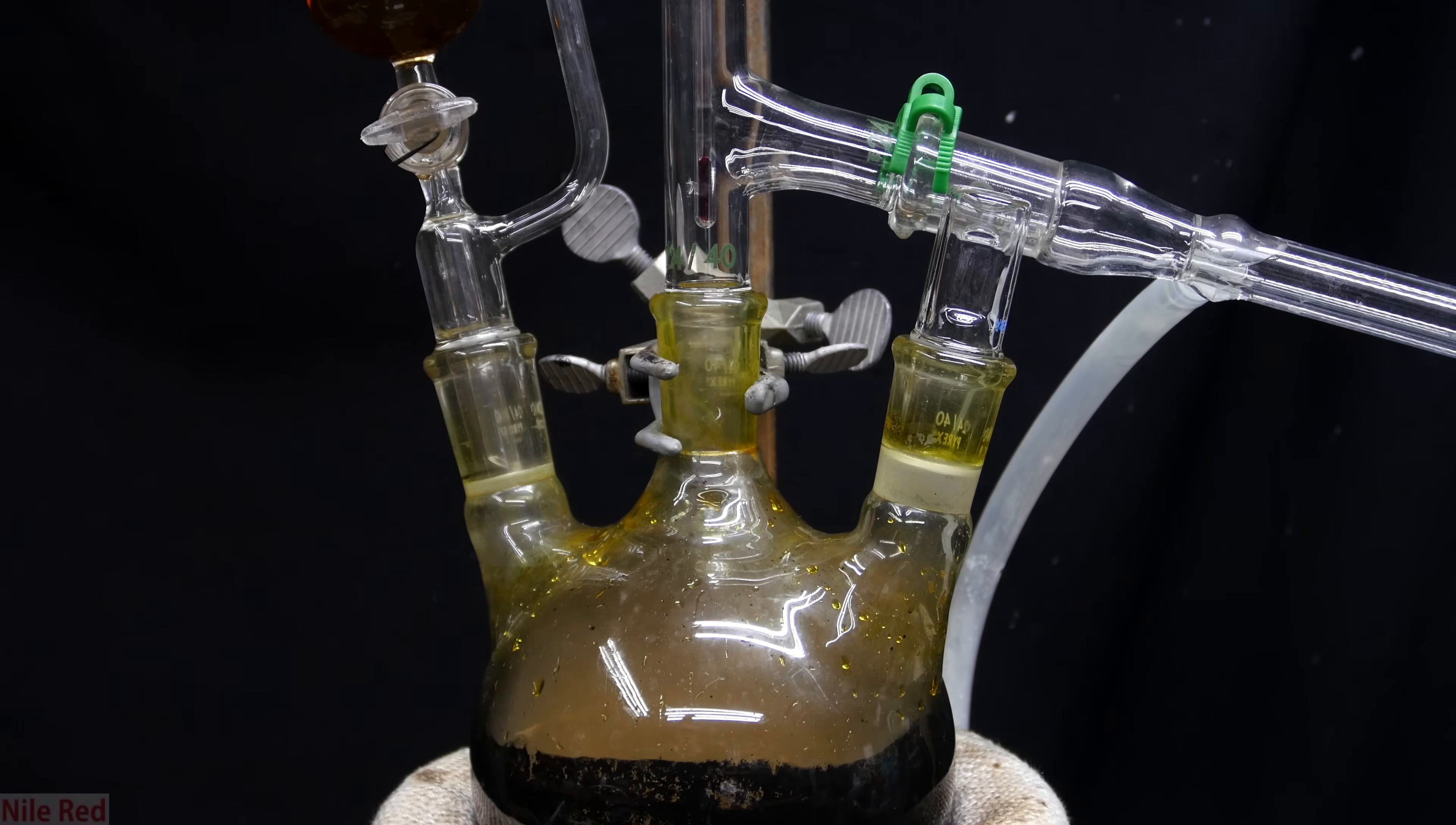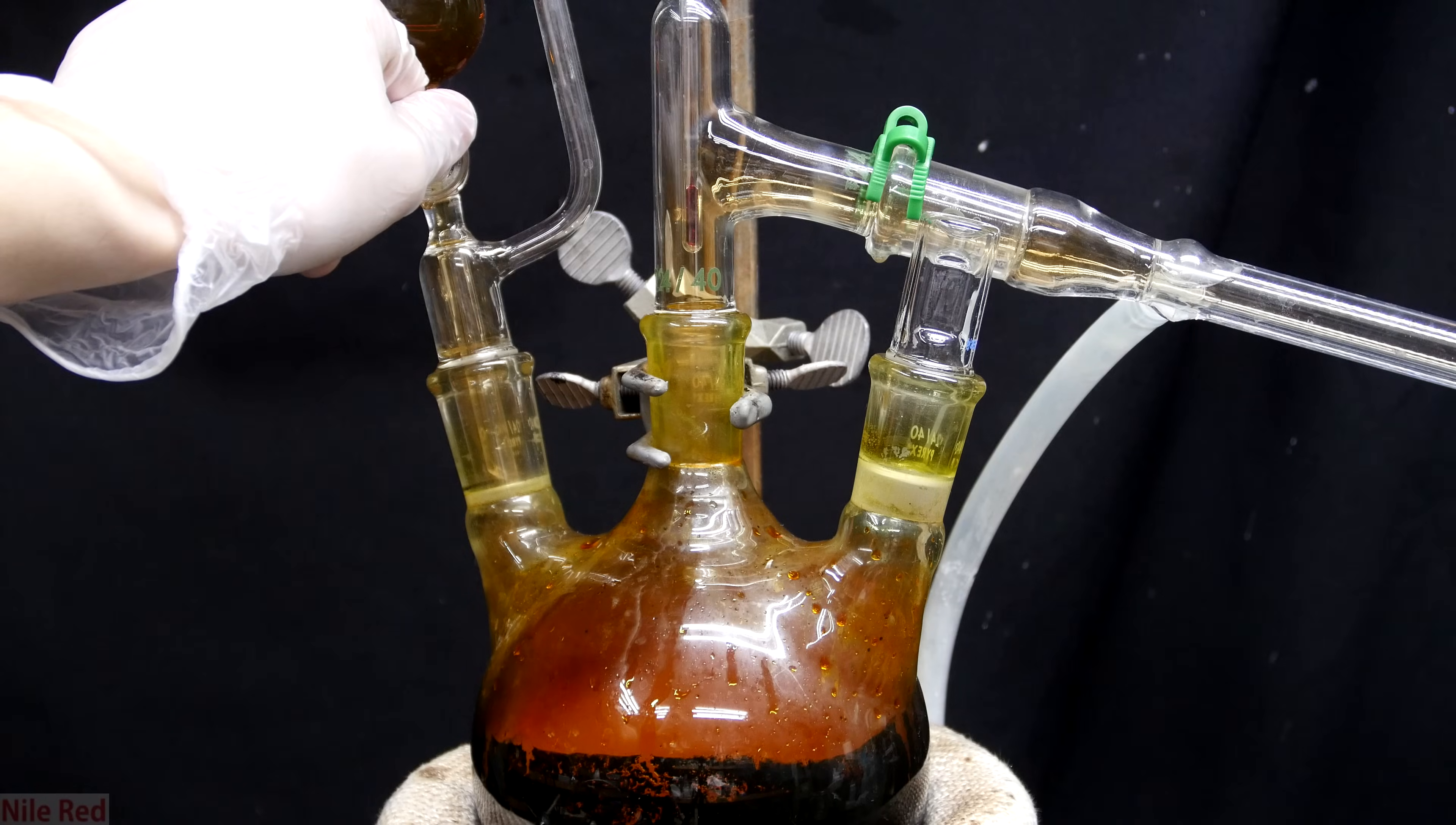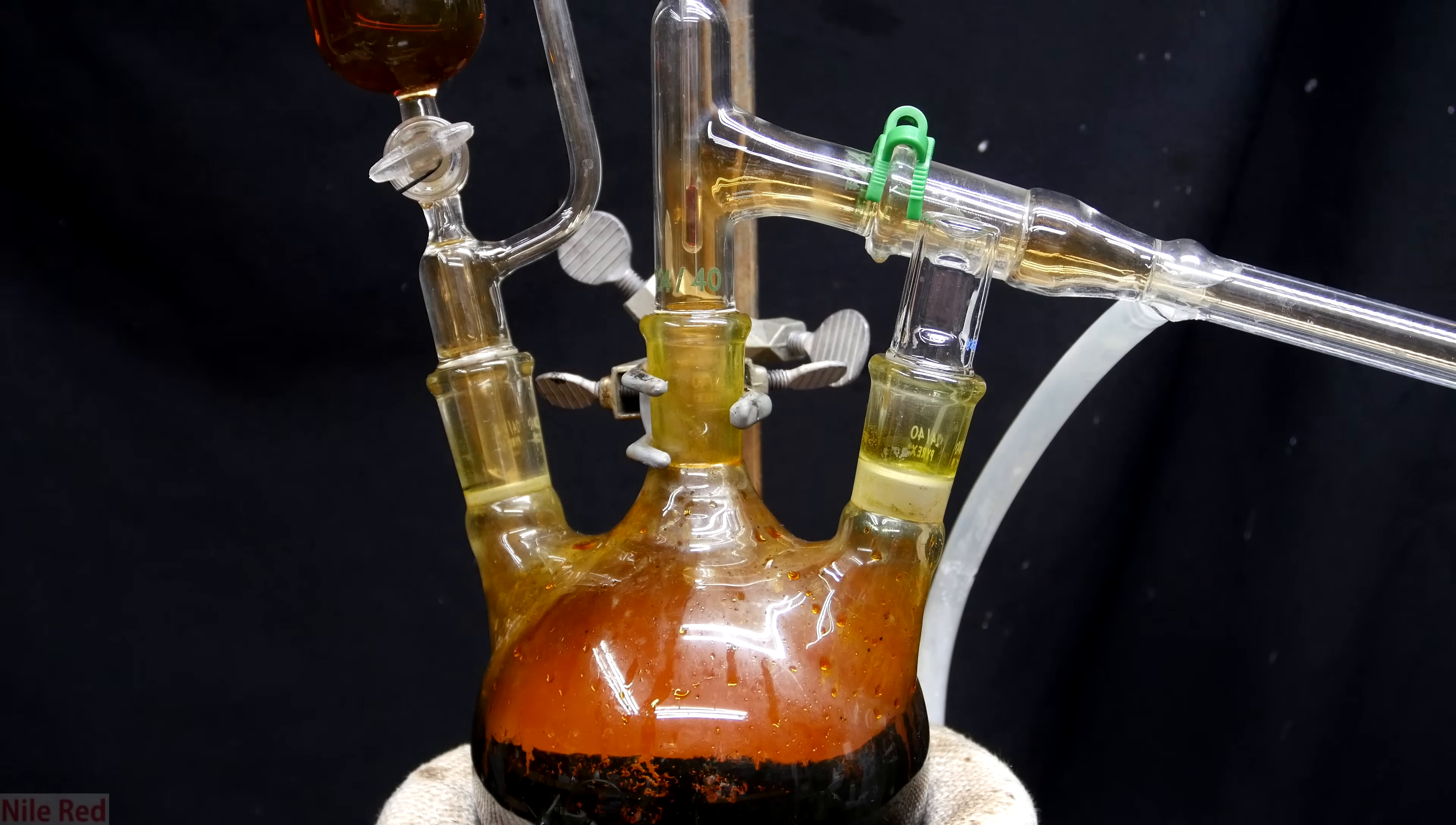It might be a little bit hard to see, but the fumes actually have a faint orange color. As we add more, it'll take on a darker and darker reddish orange color. If you look above to the part where the distillation apparatus is connected, you can see that some of the orange vapors are starting to make it over.